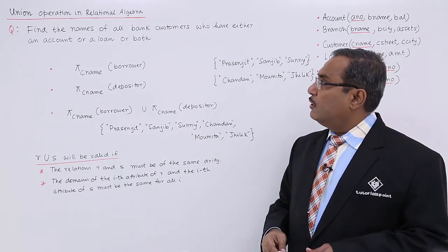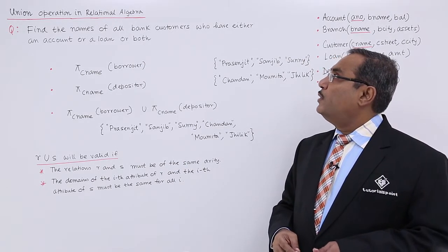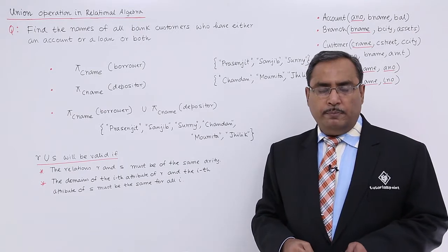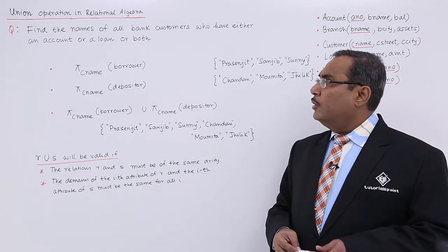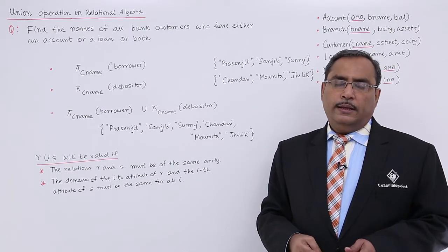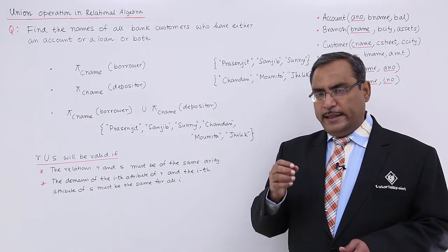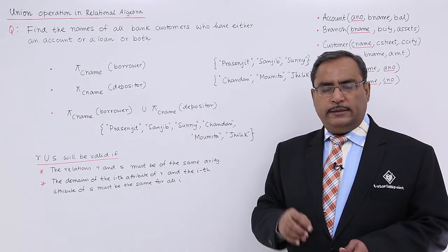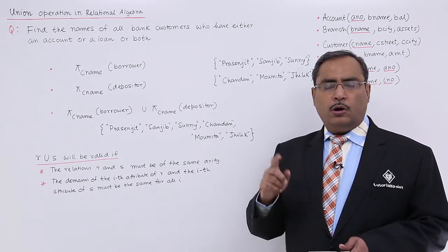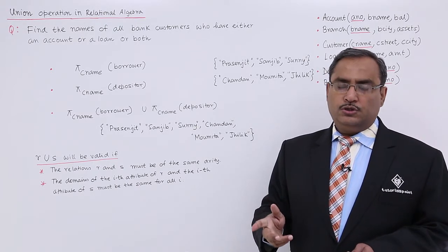Find the names of all bank customers who have either an account, meaning a savings bank account, or a loan, or both. That means we are going to get a list of all customers either having a savings bank account or loan account or both. So that is the query.